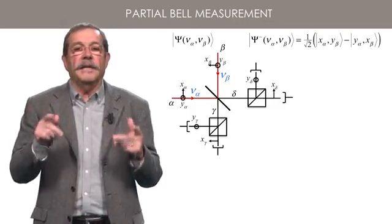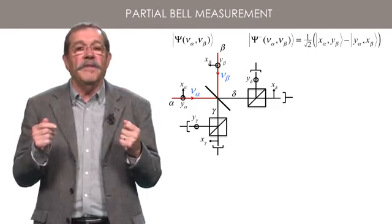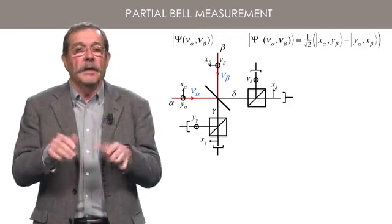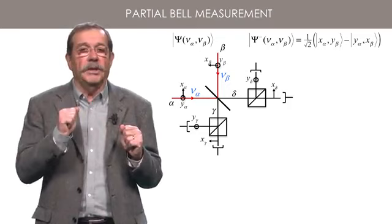It means that the apparatus will sometimes return a signal if the input state has a non-null component on psi-minus. The corresponding probability is the square modulus of that component.